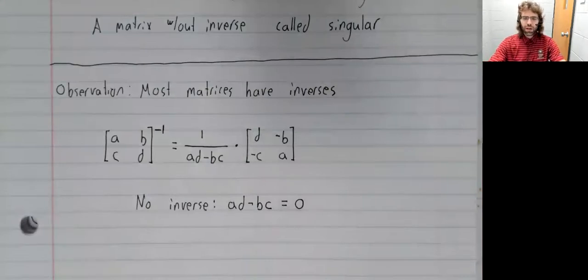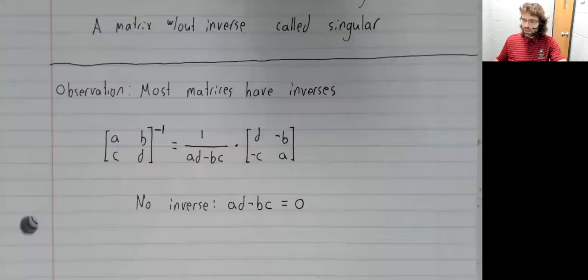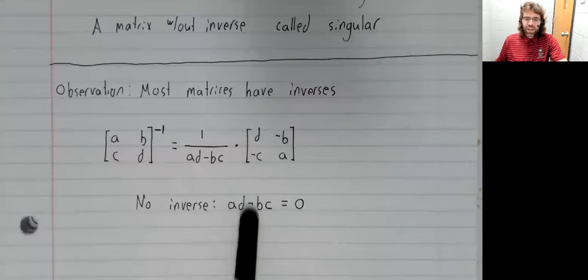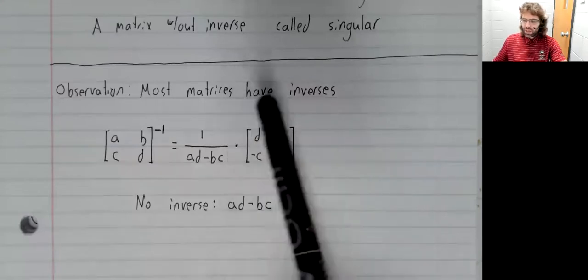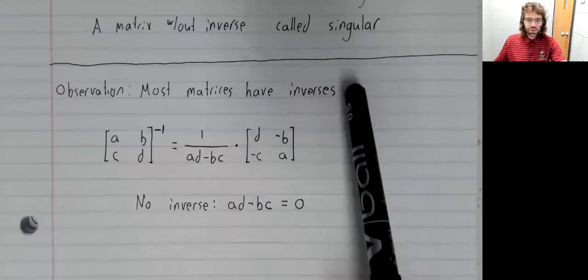Well, imagine generating a matrix at random. This could be any real number. It's vanishingly unlikely that if you create a matrix at random, this subtraction is going to be zero. Hence, this observation.